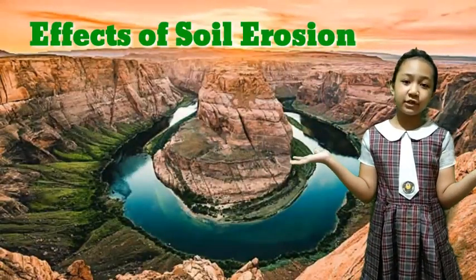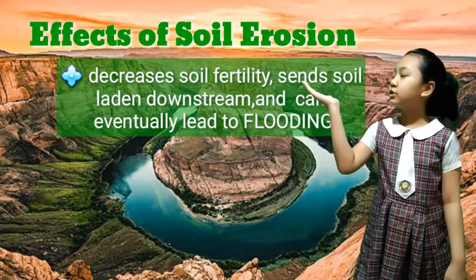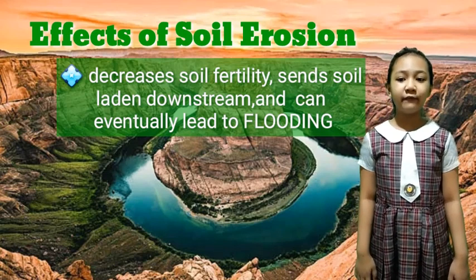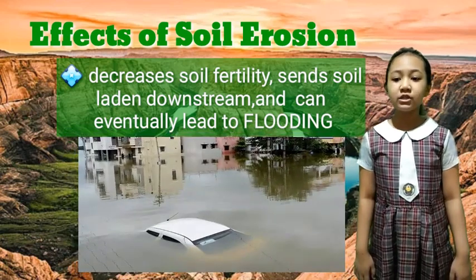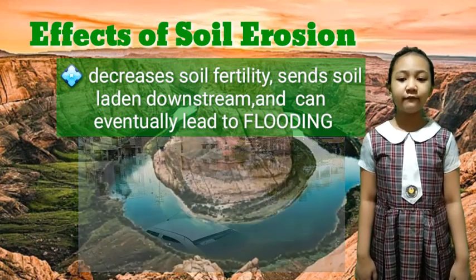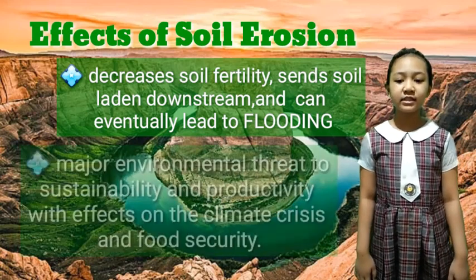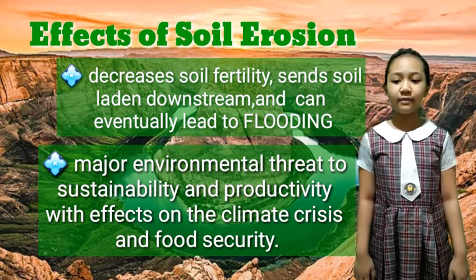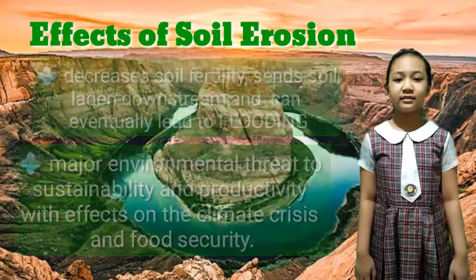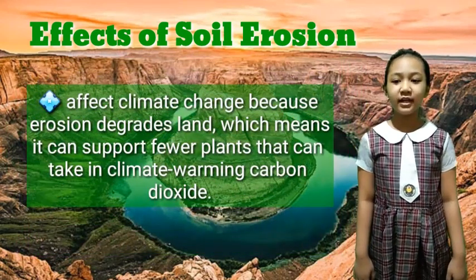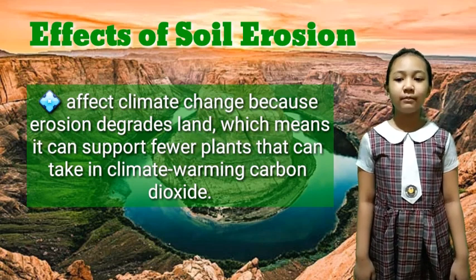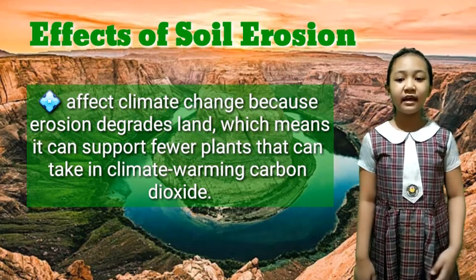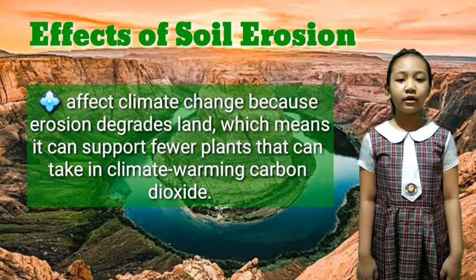What are some effects of soil erosion? Soil erosion decreases soil fertility, sends soil-laden water downstream, and can eventually lead to flooding. Soil erosion is agriculture's enemy and a major environmental threat to sustainability and productivity, with knock-on effects on the climate crisis and food security. Erosion also affects climate change because it declines land, meaning it can support fewer plants that can take in carbon dioxide.